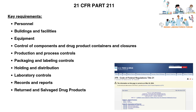Section 4, Control of Components and Drug Product Containers and Closures, details the receipt and storage of untested components, drug product containers, and closures, as well as testing and approval or rejection of components, drug product containers, and closures. Section 5, Production and Process Controls, details written procedures, handling deviations, charging of components, equipment identification, sampling and testing of in-process materials and drug products, time limitations on production, etc.